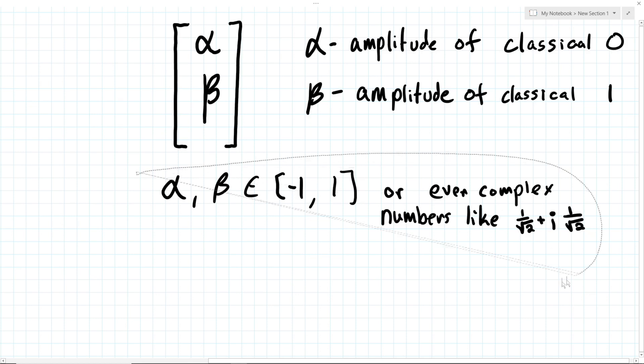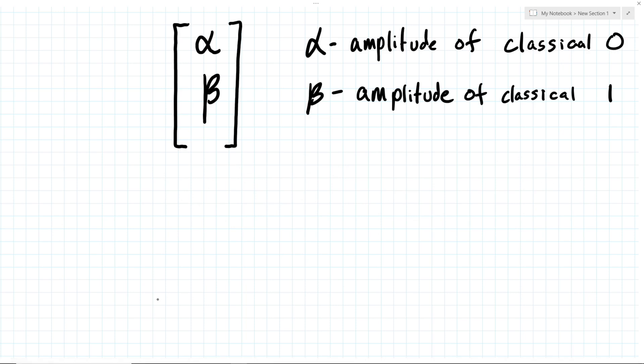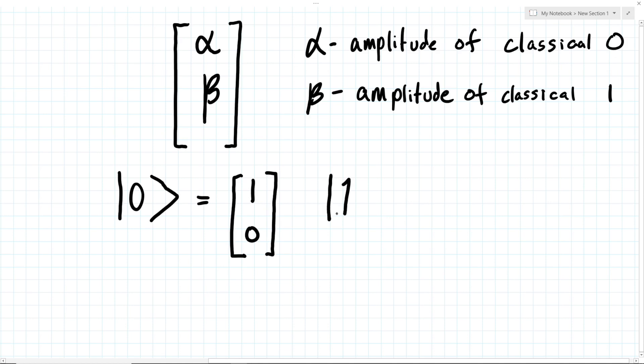The values in these vectors are called amplitudes. Two important states to remember are the 0 and 1 states, which are written like this, in ket notation. Their corresponding vectors are this. These states are important for a couple of reasons. Firstly, they are the only two states which have no randomness when performing measurement on them. The 0 state always measures as 0, and the 1 state always as 1.